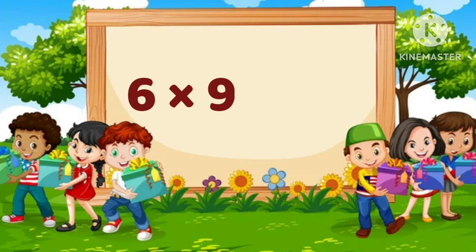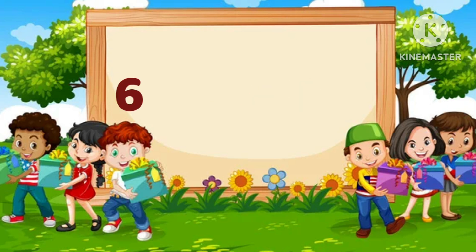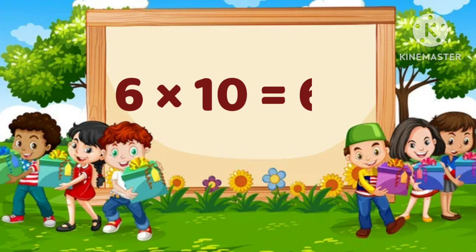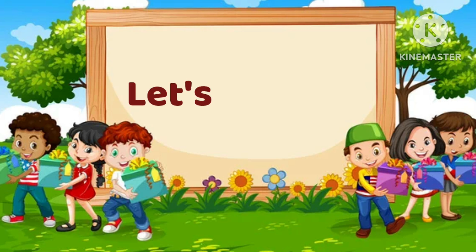6 times 9 is equal to 54. 6 times 10 is equal to 60. Now, let's repeat the table of 6.